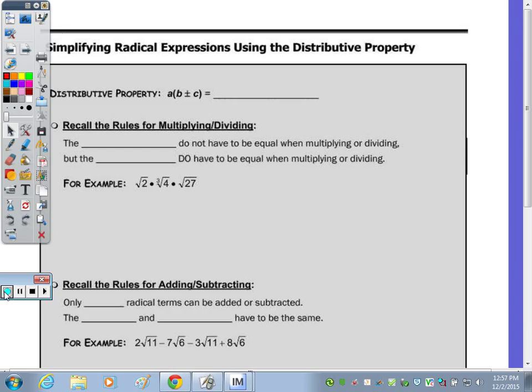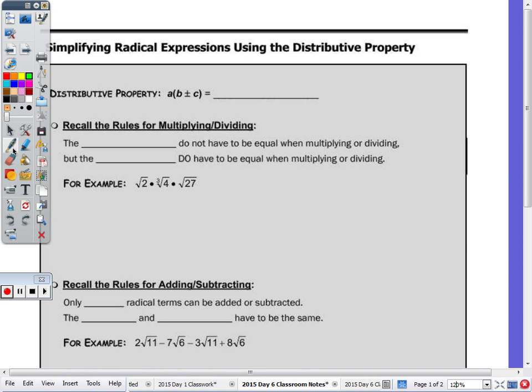At the top of your page, you can see that we are simplifying radical expressions using the distributive property. So at the top of the page, you have A times the sum or the difference of B and C. So you distribute the A all the way through the parentheses. In this case, there's only two terms, but if there were three or more, you would distribute to every single one. So it's A times the B, plus or minus A times the C.